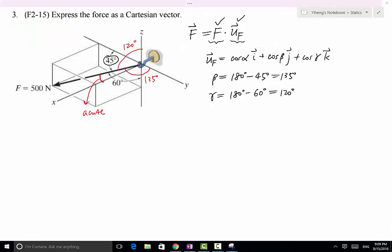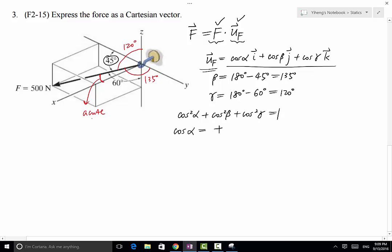Therefore, because we know that cosine alpha squared plus cosine beta squared plus cosine gamma squared equals 1, we know that because that's how you determine the magnitude of the unit vector from this equation, and the magnitude of the unit vector has to be 1. Therefore from here we can solve for cosine alpha, which equals to the positive because alpha is acute. Therefore cosine alpha has to be positive. If alpha is obtuse, then cosine alpha will be negative.